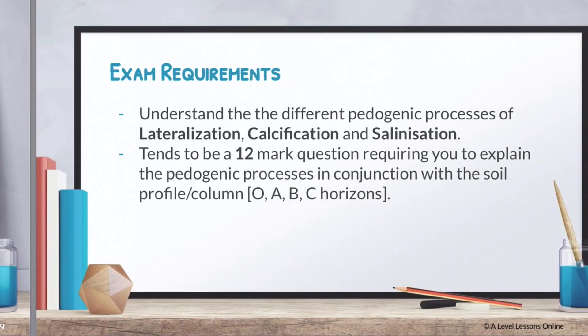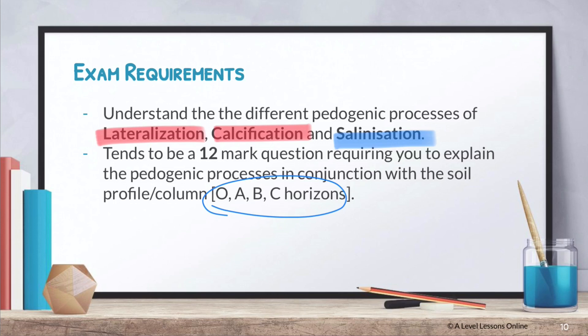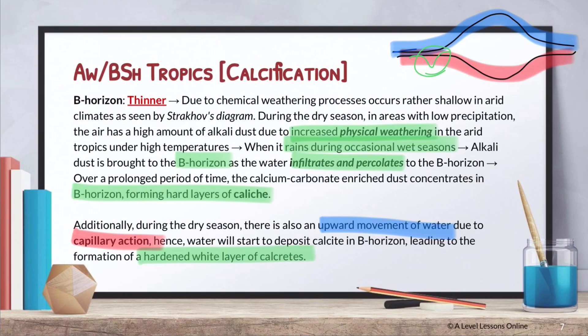All in all, for this topic, your exam requirements are to understand the three different processes of lateralization, calcification, and salinization — which is the more extreme version of calcification. It tends to be a 12-mark question requiring you to explain all your different horizons. Go and understand your different horizons so you can use the different processes to substantiate. This topic will usually come in conjunction with your physical and chemical weathering. Your essay should go horizon by horizon, one by one.